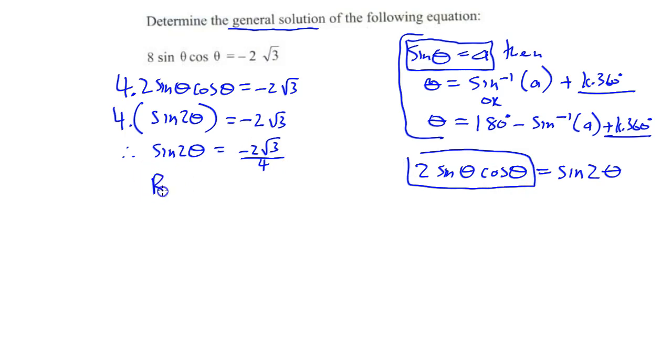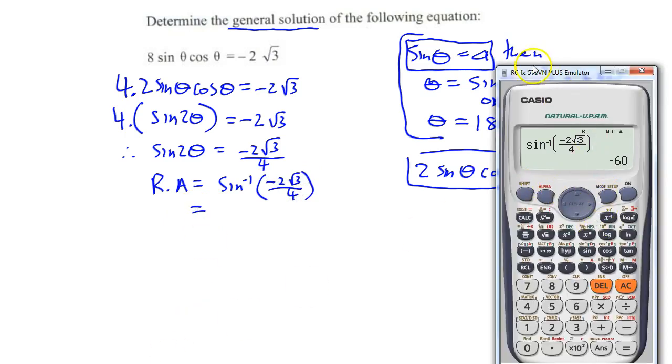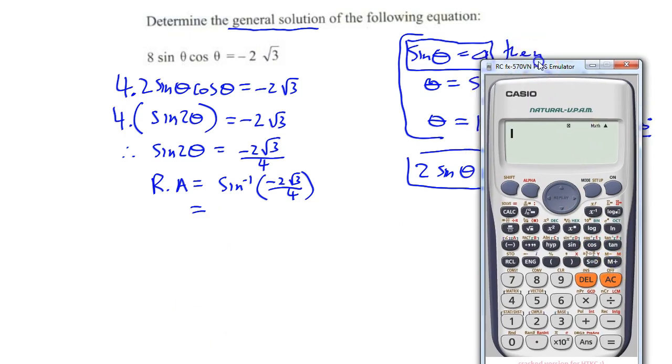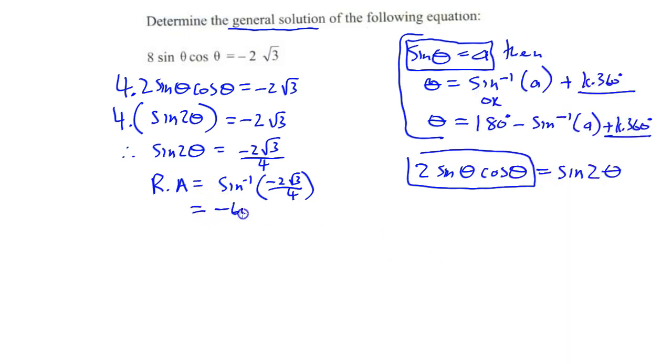So now we are going to be looking at our reference angle is equal to sin inverse of minus 2 root 3 over 4. Let's just quickly put that in our calculator. So it will be shift sine negative 2 root 3, divided by 4. And negative 60 degrees is my reference angle. So this whole part here is basically the reference angle, minus 60 degrees.